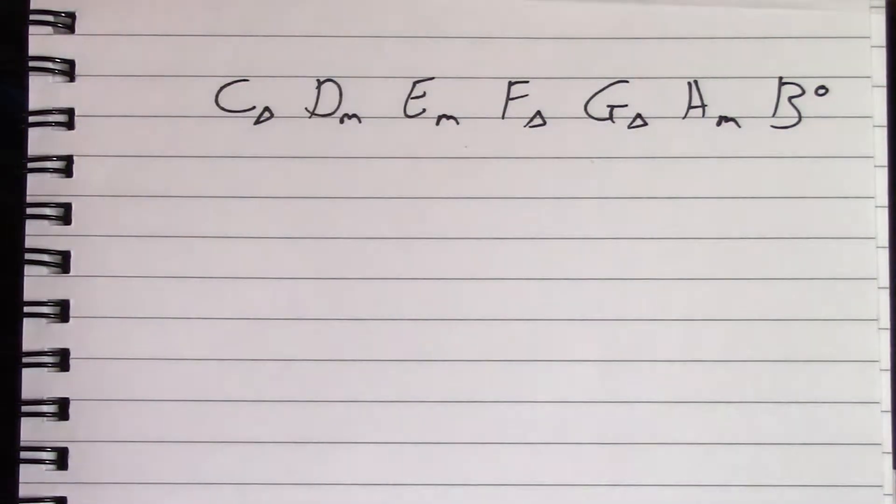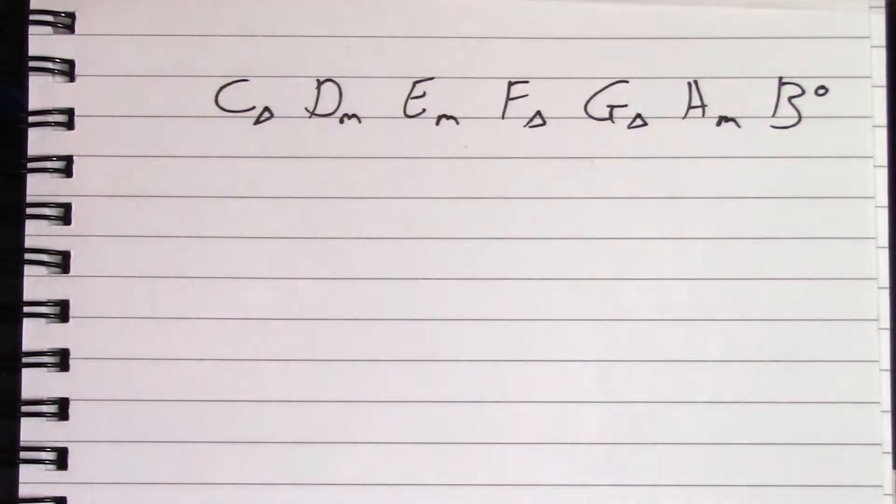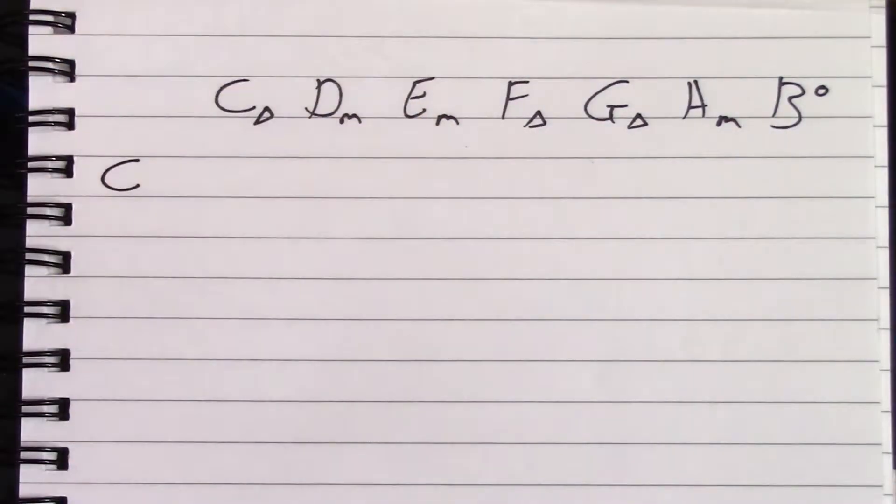It can be any note, but we're going to choose a note that exists within C major to keep it simple. You choose a note, add it to each of these chords, and see what the name of that new chord is. Let's start with C, the root note, to keep it simple.